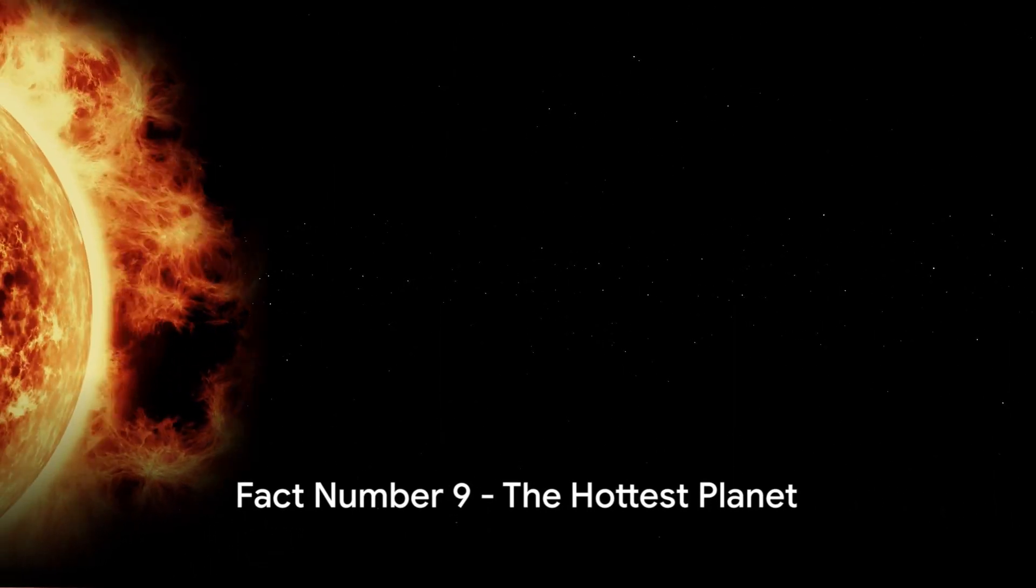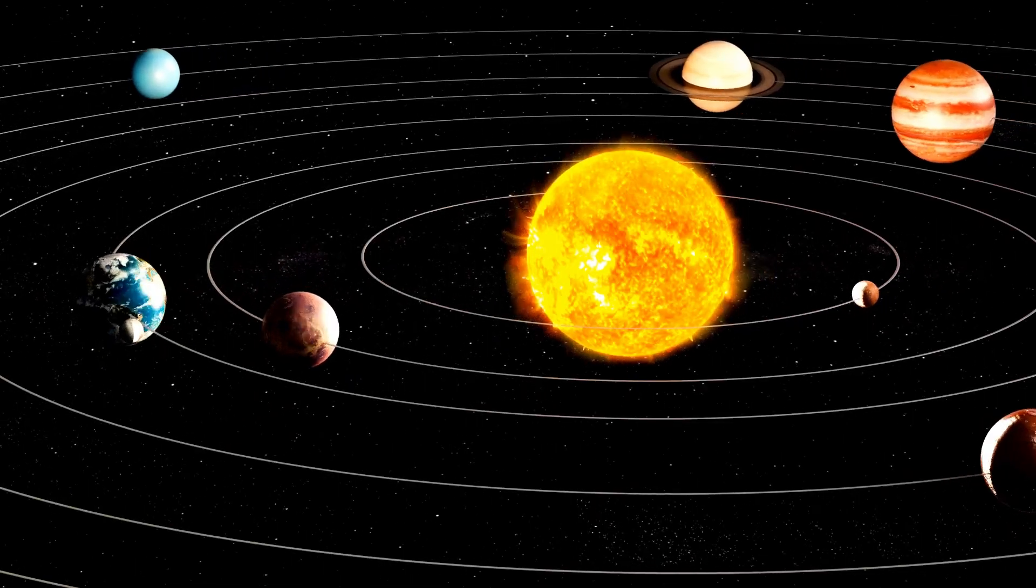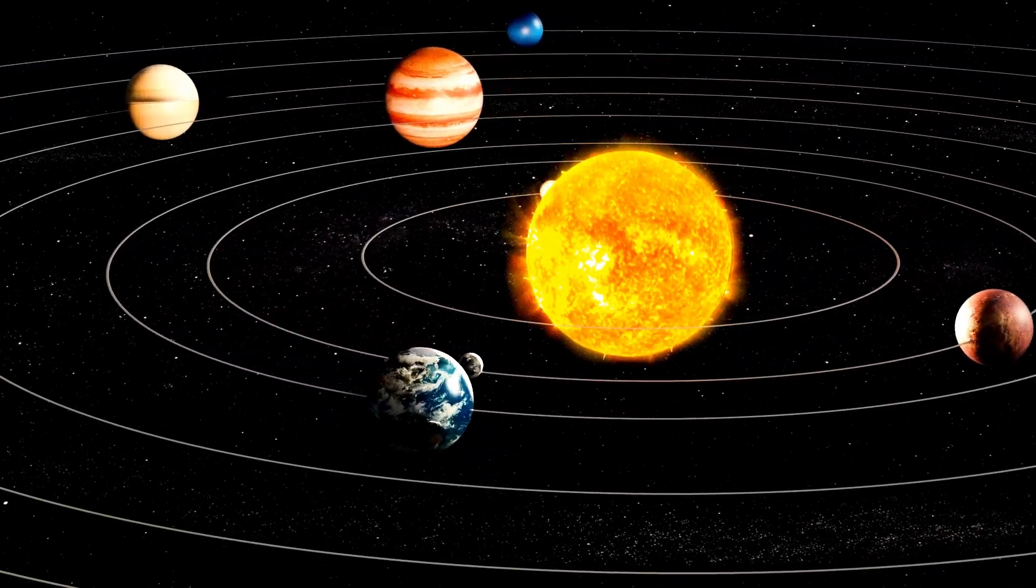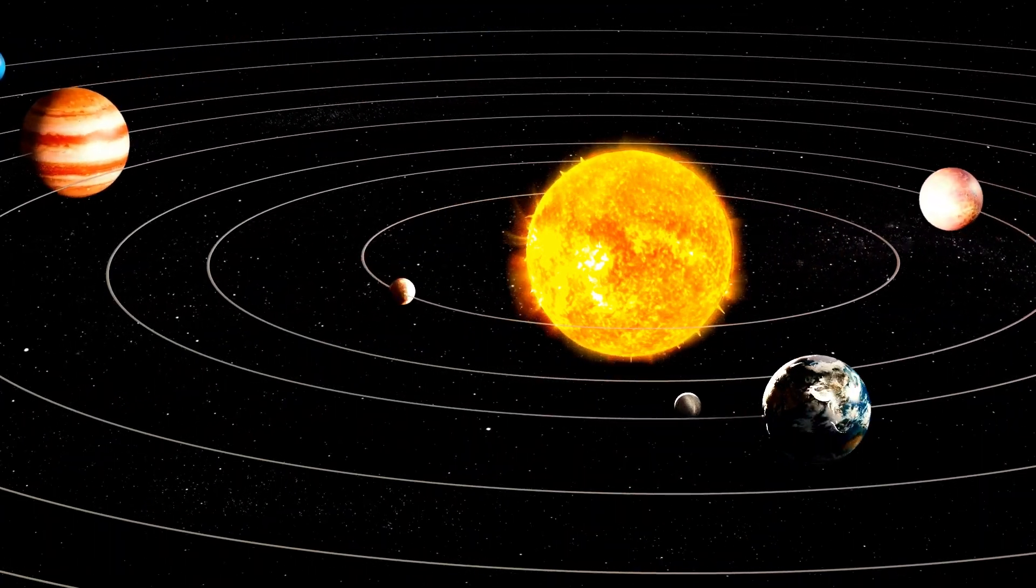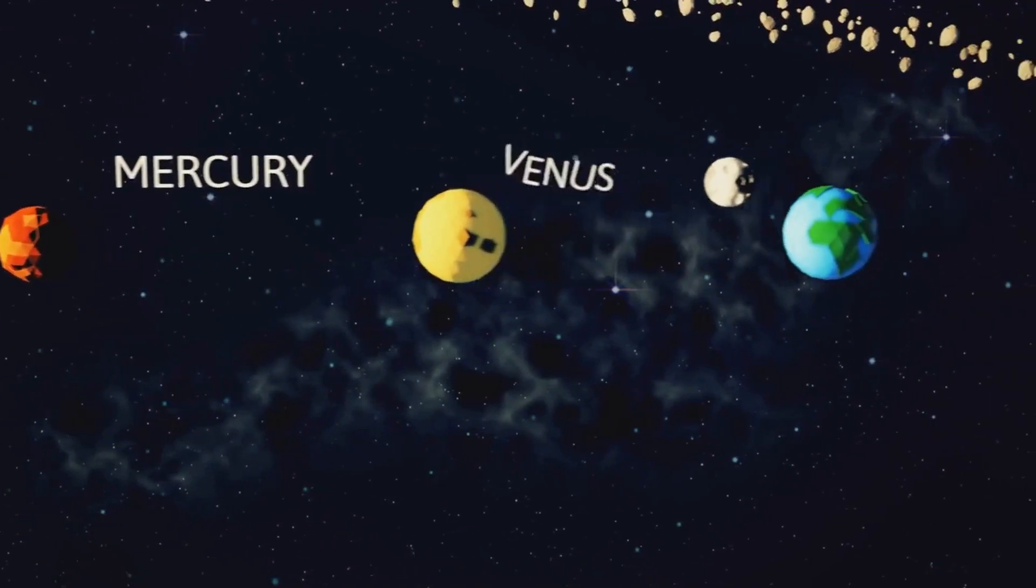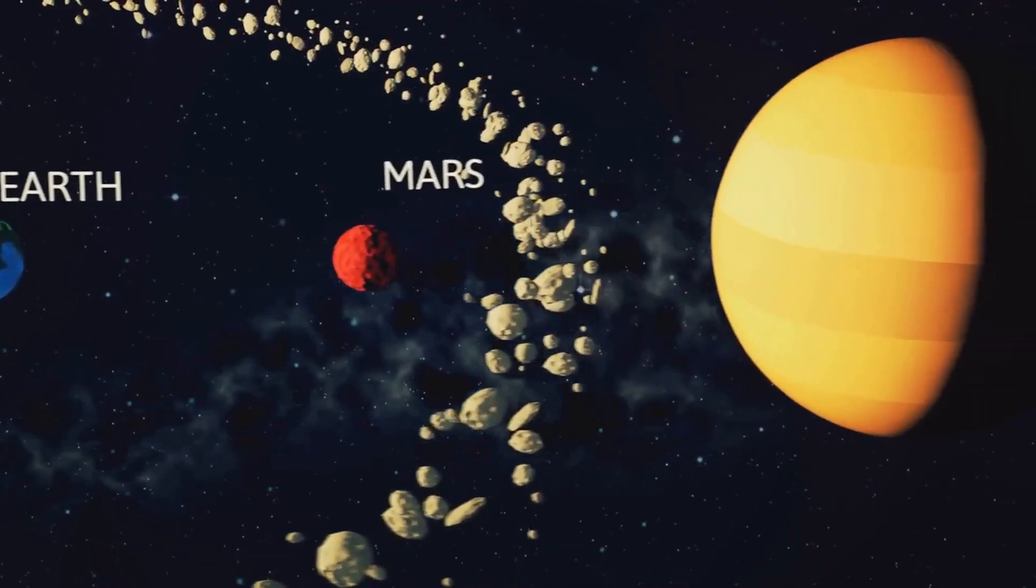Moving down to fact number 9, Venus is the hottest planet in our solar system. Now, you might be thinking, wait a minute, isn't Mercury the closest planet to the Sun? Shouldn't it be the hottest? Well, surprisingly, the answer is no. Venus, despite being the second planet from the Sun, boasts the highest average temperature of any planet in our solar system.